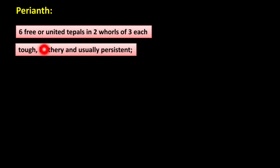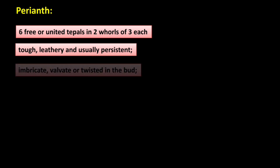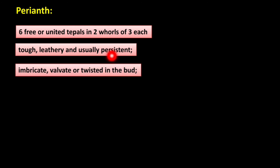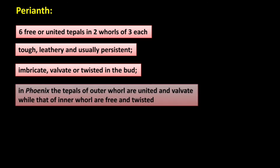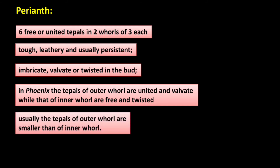Let us study the perianth: six free or united tepals, or perianth parts, in two whorls of three each. They are tough, leathery and usually persistent — meaning the tepals remain even after fruit formation. Aestivation is imbricate, valvate or twisted. In Phoenix, tepals of the outer whorl are united and valvate while those of the inner whorl are free and twisted. Usually outer tepals are smaller than inner tepals.